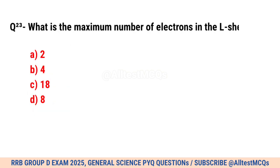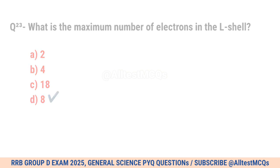Question No. 23. What is the maximum number of electrons in the L-shell? Right option is D.